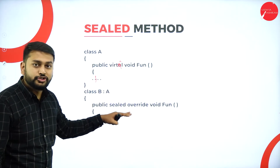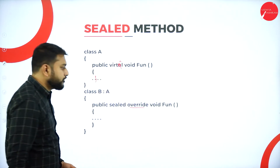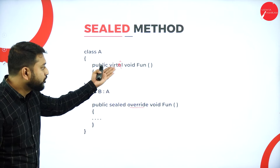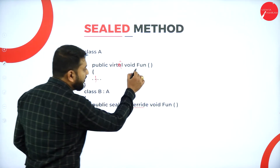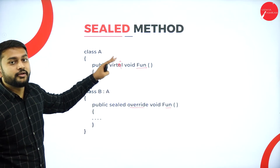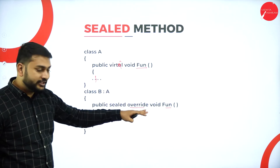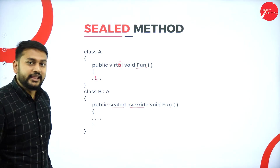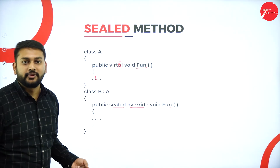Here I have a virtual method. I told you — always use the keyword override. Which method can you override? Only the virtual method. The function name here is FUN. Whatever virtual method I have, only that method I can override. To make this method sealed, I use the keyword sealed. That is what you need to remember.